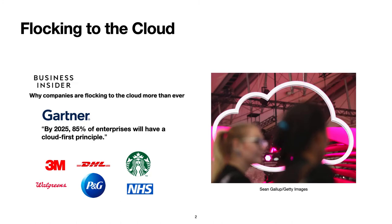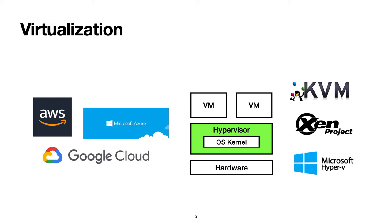The shift to cloud computing has been one of the most significant tech trends of the past few years, due to the increasing demands in online services and the support for scalability. Cloud computing is supported by a technology called virtualization that allows multiple virtual machines to run on a single piece of hardware. These virtual machines and their resources are managed by a privileged software called hypervisor.